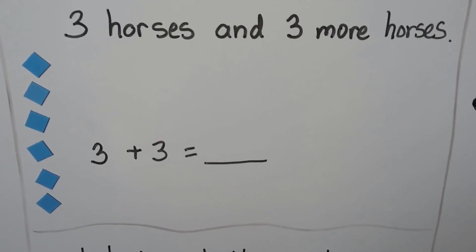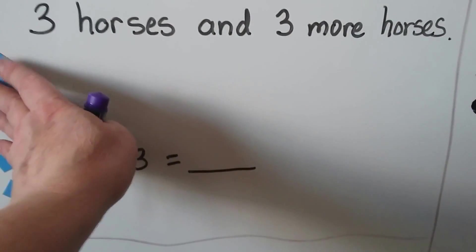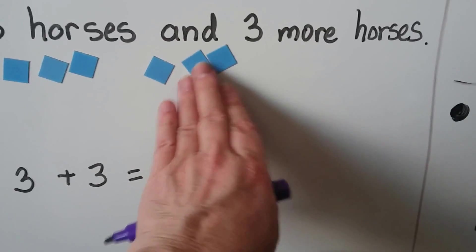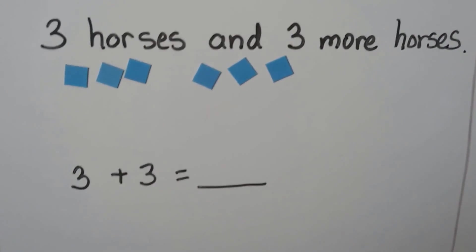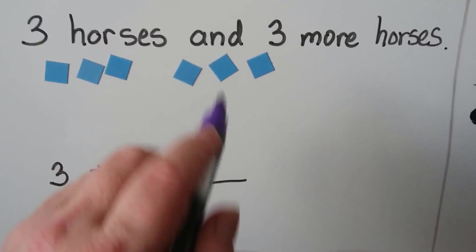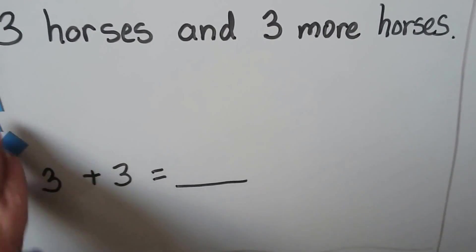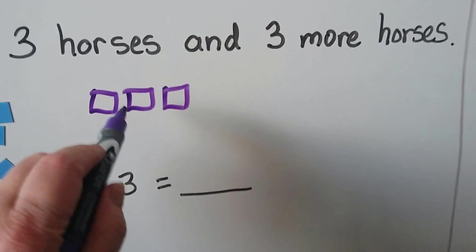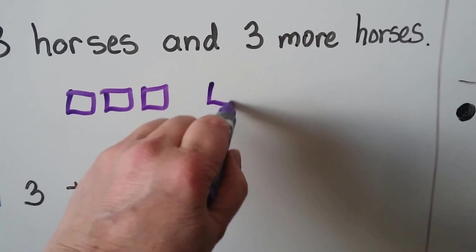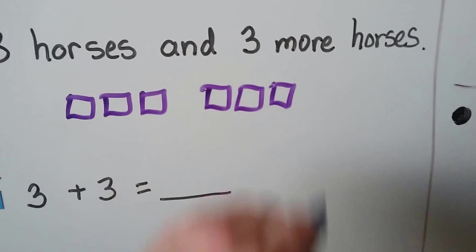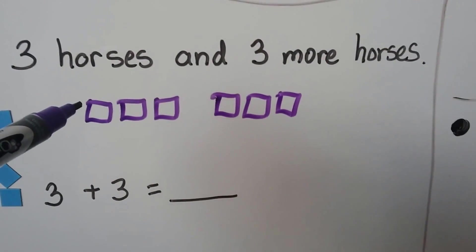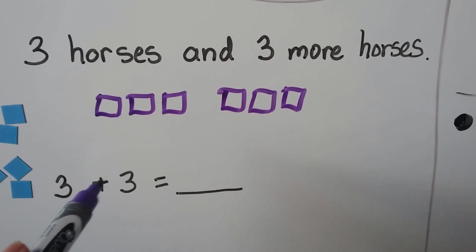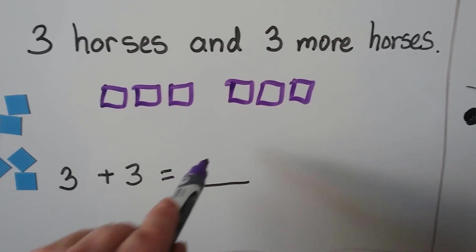Three horses and three more horses. We could use counters — three counters and three more counters — then add them all up. Or we could draw our own: one, two, three, four, five, six. Three plus three is equal to six.